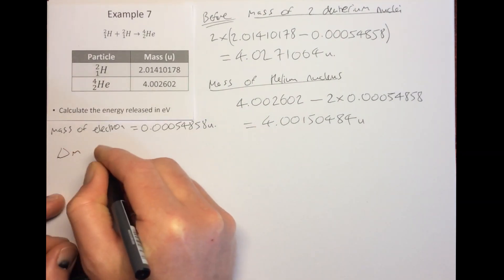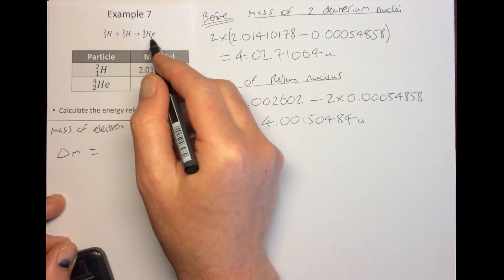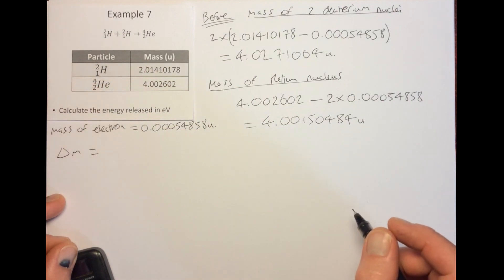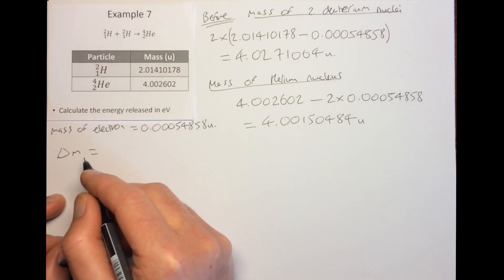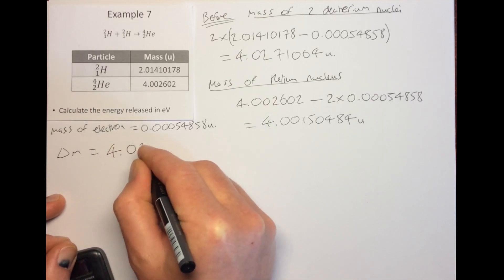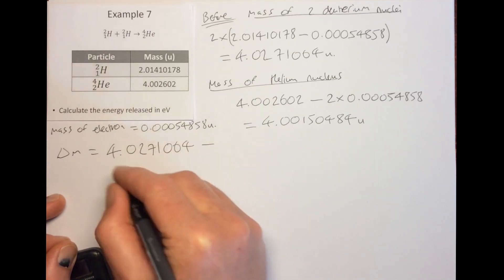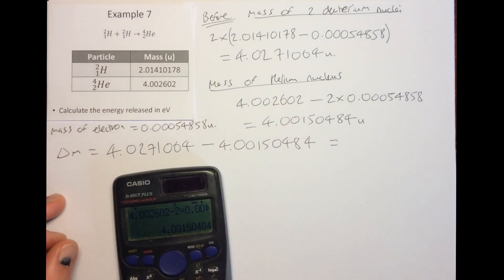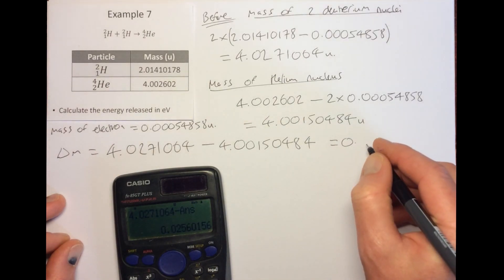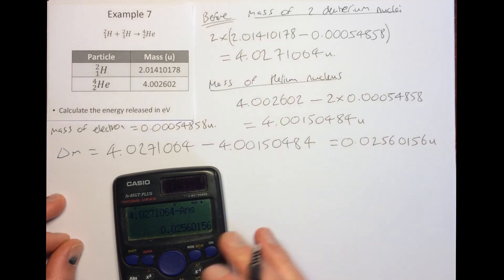The mass defect delta m is the difference in mass between the reactants and products. The helium nucleus has less mass than the two deuterium nuclei, because for this to be energetically favorable, mass must be converted into energy. So delta m equals 4.02710640 minus 4.00150484, giving us 0.02560156 u. That's our mass defect.